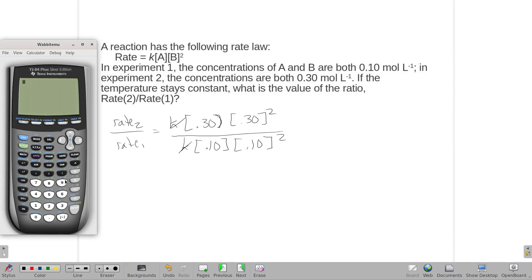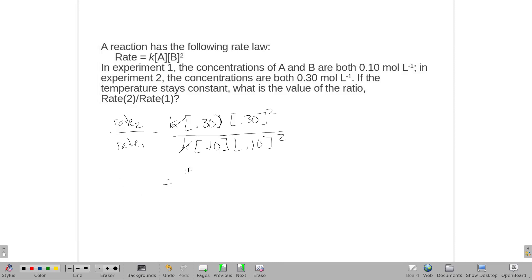So to get this rate, 0.3 times 0.3 squared, divided by 0.1 times 0.1 squared... 27.